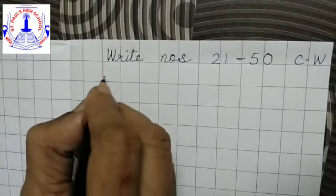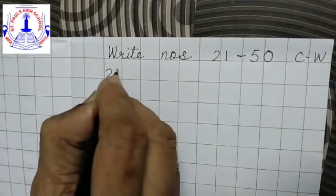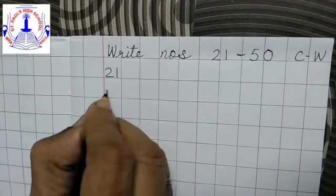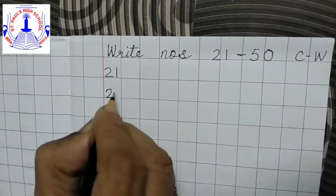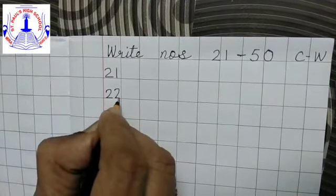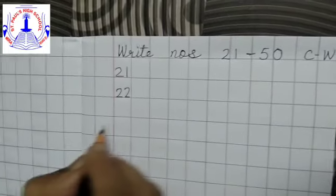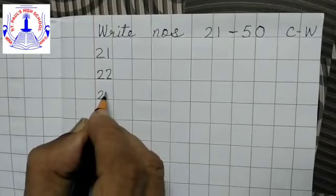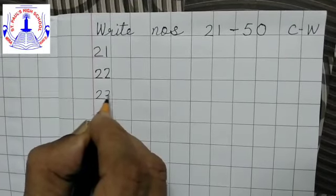Now start writing along with me. 2 and 1, 21. 2 and 2, 22. 2 and 3, 23.